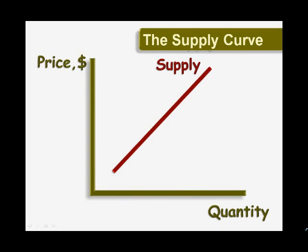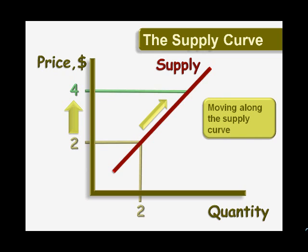The supply curve relates prices to quantity supplied. According to this curve, if the price is $2, suppliers will offer only 2 units. If the price rises to $4, more money can be made if more is offered. So we move up along the supply curve, increasing the quantity supplied to 4. Next, we'll bring supply and demand together to see how a market works.